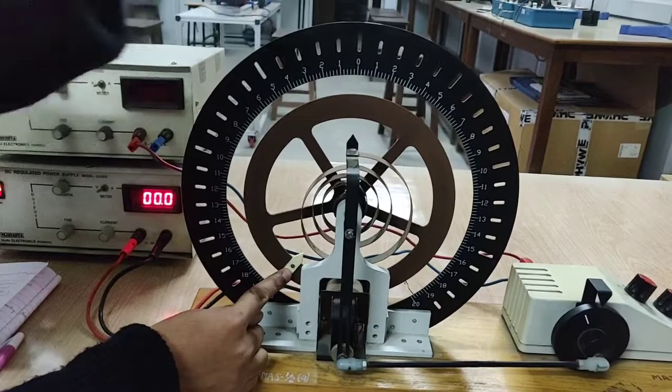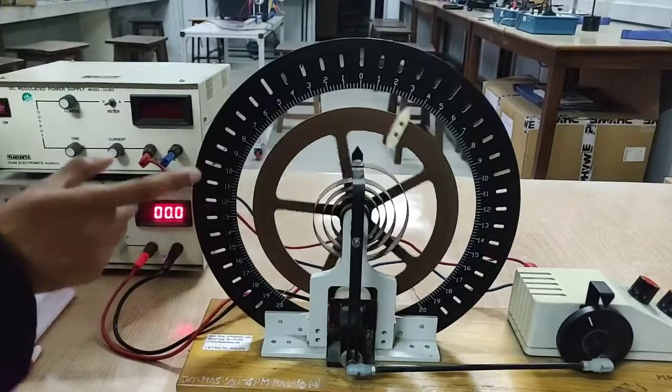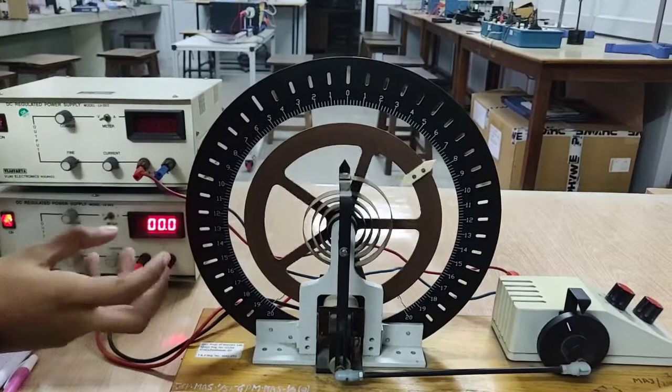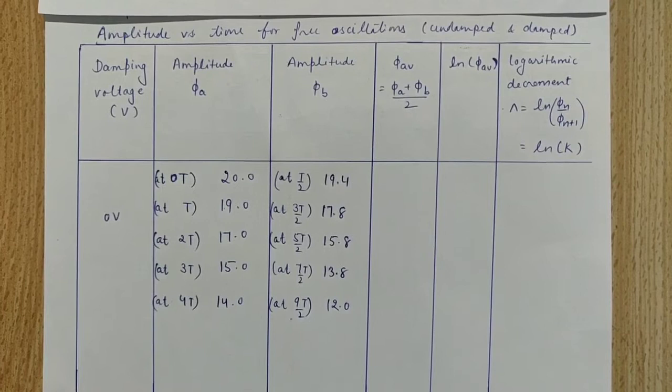On the left side as well as the right side, we observe at time periods T, 2T, 3T and so on. We have to note them down one by one, so we have to be quite quick as well as observant. We can also see it by pausing the video. This is the table: amplitude versus time for free oscillations, undamped and damped.